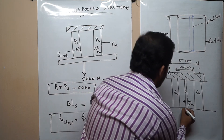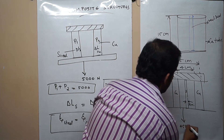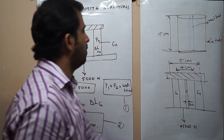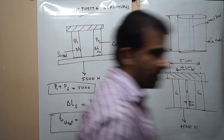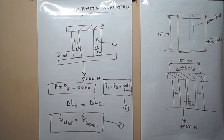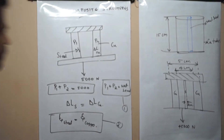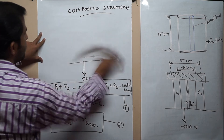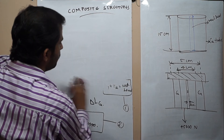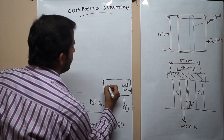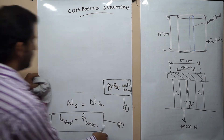A load of 45,000 Newton is acting on this composite structure. We need to analyze the stress as well as the load acting on these two materials. Using the first inference: P1 plus P2 equals the net load.